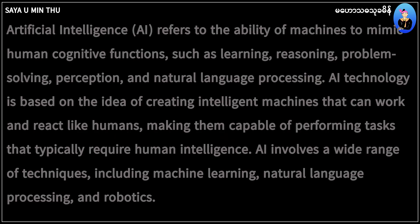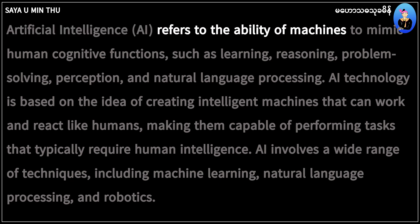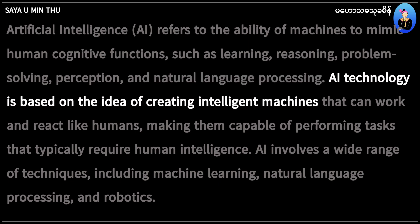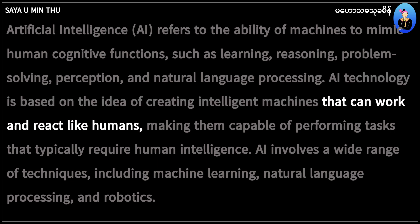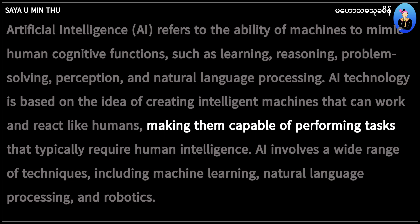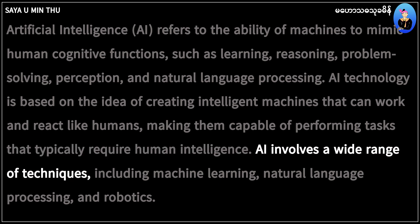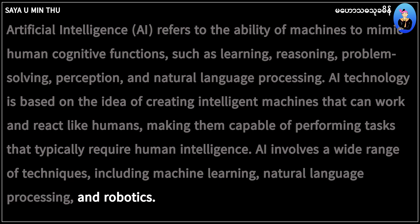Read the passage. Artificial intelligence refers to the ability of machines to perform human-connected functions, such as learning, reasoning, problem-solving, perception, and natural language processing. AI technology is based on the idea of creating intelligent machines that can work and react like humans, making them capable of performing tasks that typically require human intelligence. AI involves a wide range of techniques, including machine learning, natural language processing, and robotics.